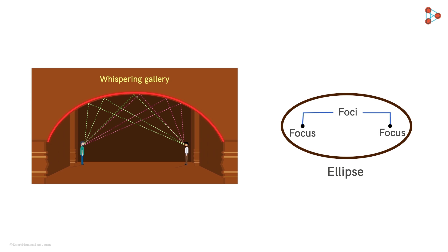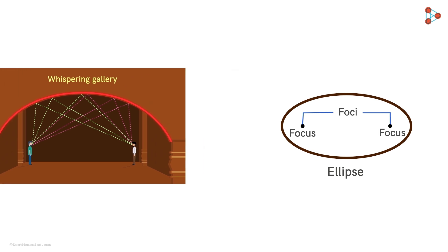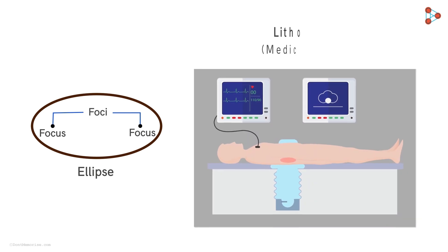Wait, there is more. Elliptical shapes even play a role in a medical device called the lithotriptor. Due to its reflective property, it is used to break kidney stones.